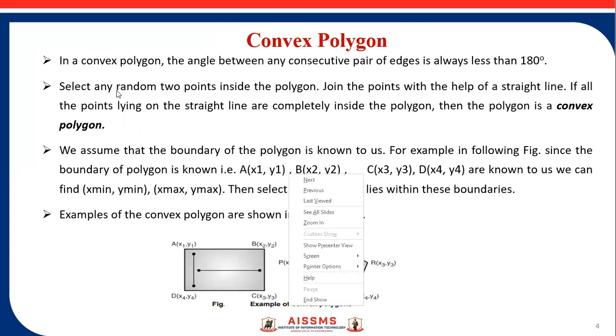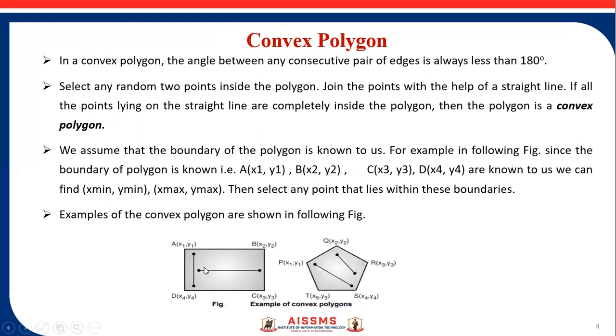Here the angle between any consecutive pair of edges is always less than 180 degrees. If we select any two random points inside the polygon and join them with a straight line, and all the points on that line are completely inside the polygon, then the polygon is called a convex polygon.